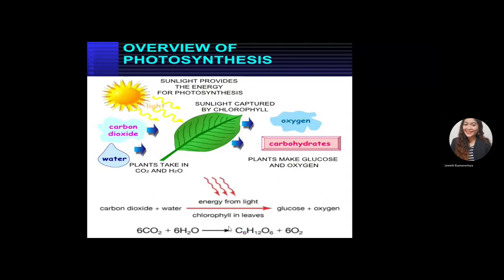It starts with six carbon dioxide (6CO₂) and six molecules of water (6H₂O), which are utilized using heat from sunlight. The product is C₆H₁₂O₆, which is one molecule of glucose.